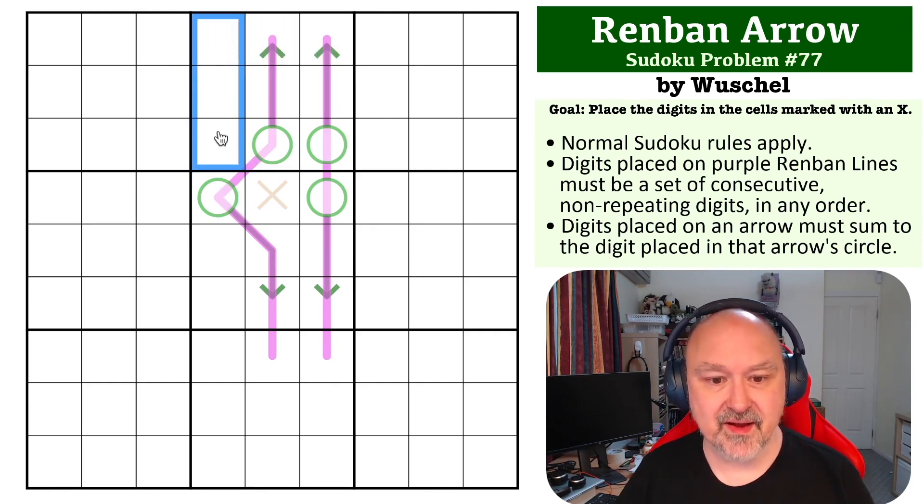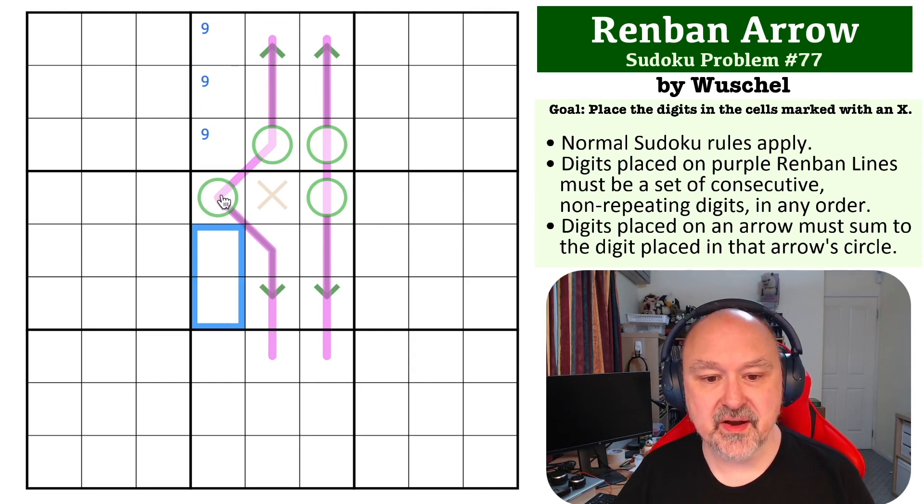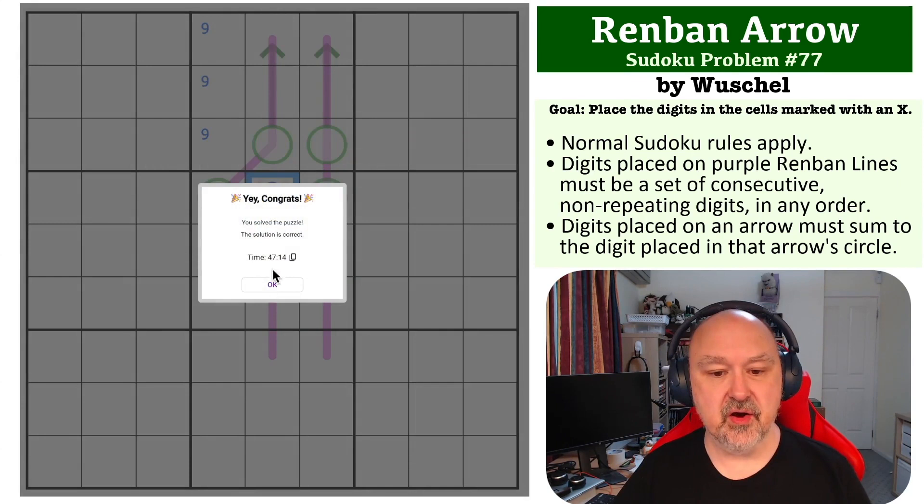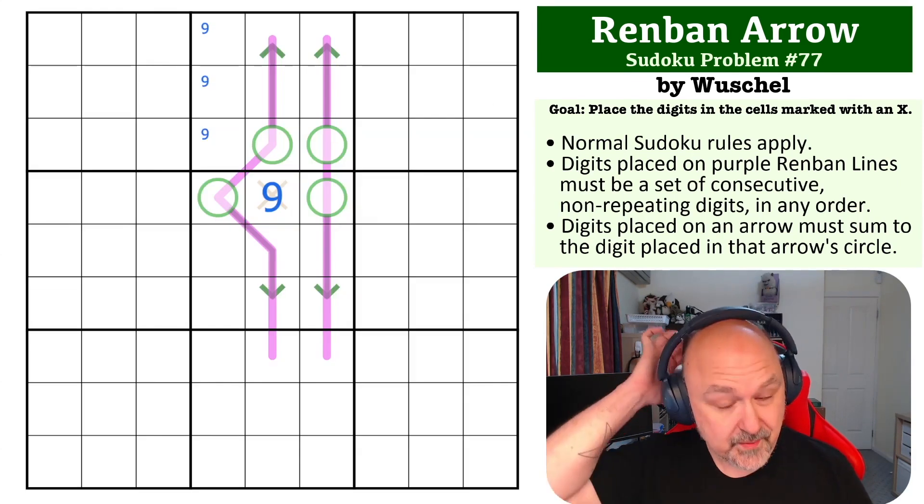So you can never put nine on any of these renban lines, so the nine has to go here in box two. And because you can't put nine on a renban line, then you can't put nine here, you can't put nine on any of the renban lines, and this has to be a nine, which is the solution to the problem. Please ignore the timer - I've had this one loaded on my computer for ages.